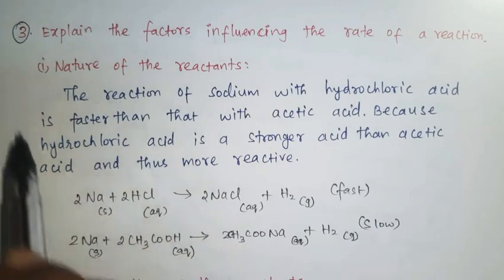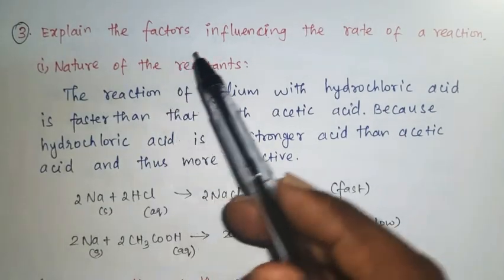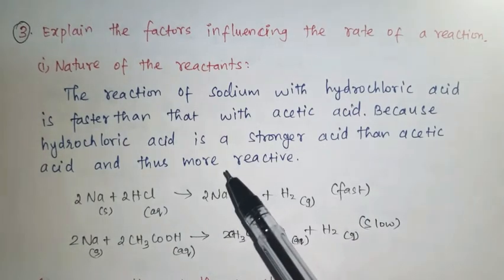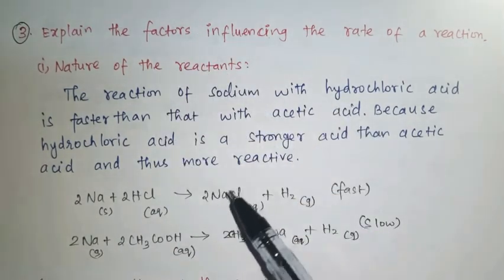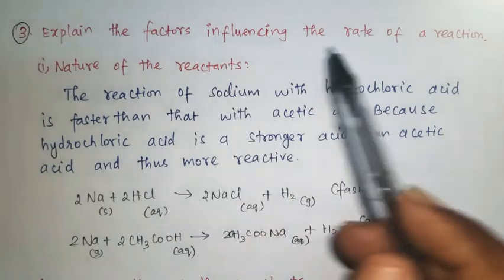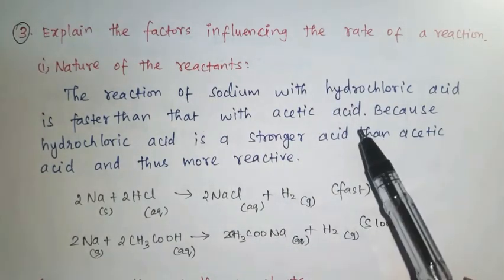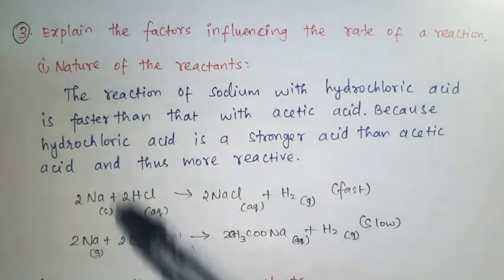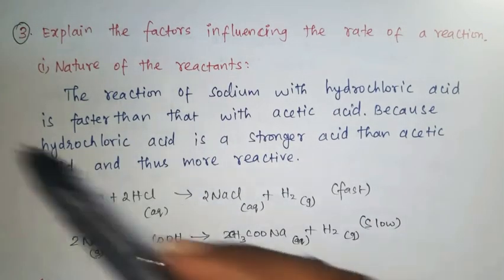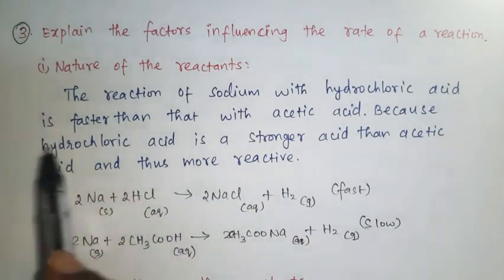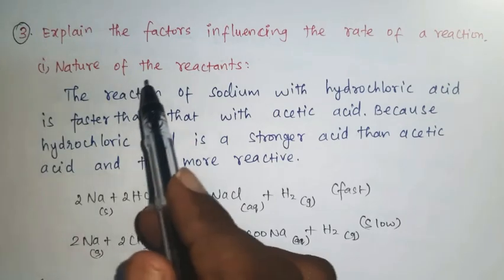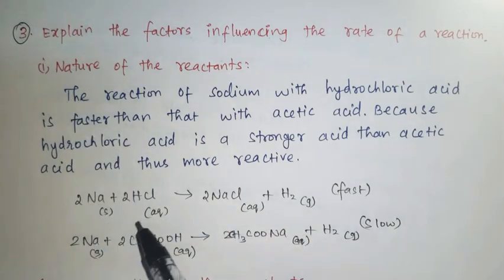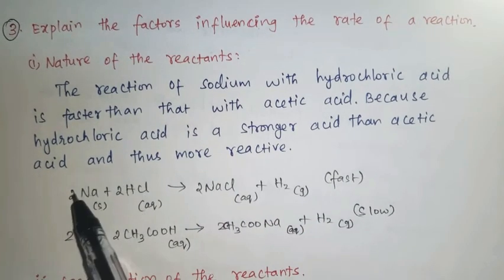Question number 3: Explain the factors influencing the rate of a reaction. There are 6 factors which influence the rate of a reaction. We will see them one by one. First factor: nature of the reactants.